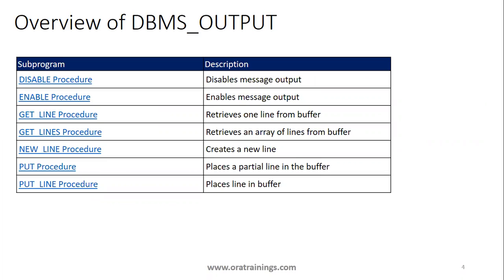The first one is DISABLE. When you invoke DBMS_OUTPUT.DISABLE it will disable the logging output. ENABLE is for enabling the output. GET_LINE or GET_LINES is for retrieving content from the buffer. GET_LINE and GET_LINES are rarely used by developers; we just want to understand what is available in DBMS_OUTPUT and what we generally use as developers.